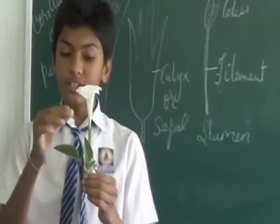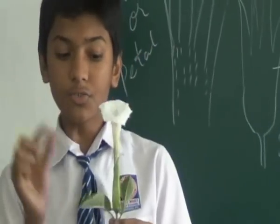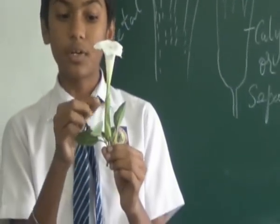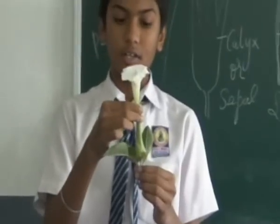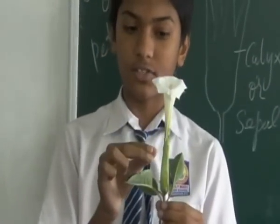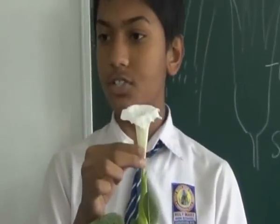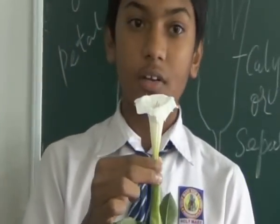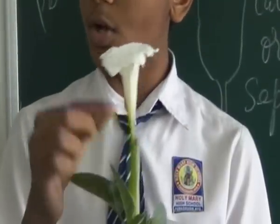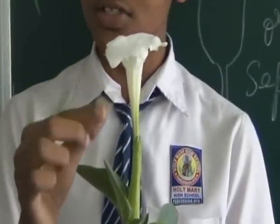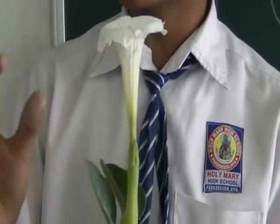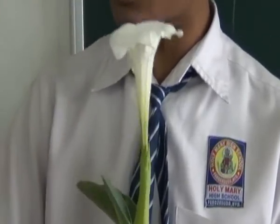It contains four whorls. The first whorl is Calyx, which gives protection to the flower. The Calyx is also called Sepal. The second whorl is Petal, which is also called Corolla.